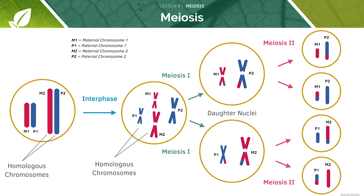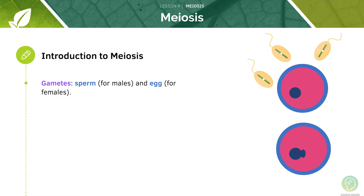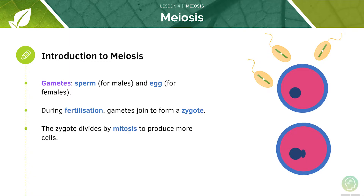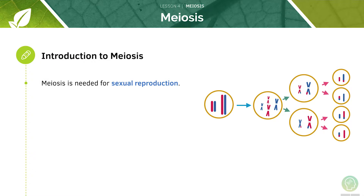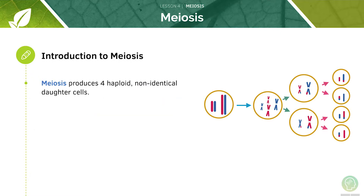In the final step, we have meiosis 2, which is the second division. Remember, mitosis only has one division. On the right, we can see a diagram of an egg cell, the female gamete, surrounded by lots of sperm cells, the male gamete. During fertilization, they form a zygote, which then divides by mitosis to produce more and more cells. Meiosis is necessary for proper sexual reproduction to occur, and without meiosis there are no sex cells and hence no fertilization. Meiosis produces four haploid, non-identical daughter cells.